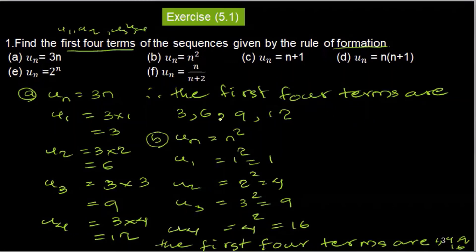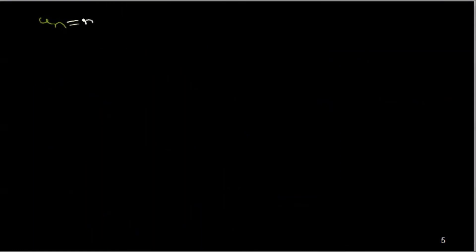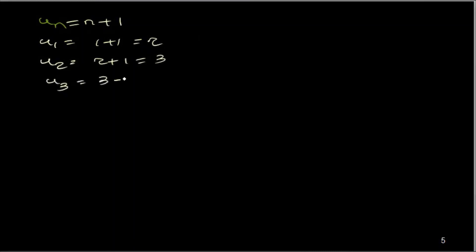For Un equal to n plus 1: U1 equals 1 plus 1 equals 2, U2 equals 2 plus 1 equals 3, U3 equals 3 plus 1 equals 4, U4 equals 4 plus 1 equals 5. The first four terms are 2, 3, 4, 5.